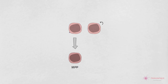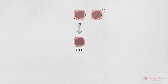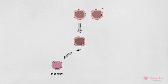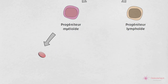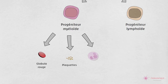À ce stade, une cellule fait l'un des deux choix d'engagement de lignage. Elle peut devenir une cellule progénitrice myéloïde ou lymphoïde. La première donne naissance à des globules rouges, des plaquettes, des granulocytes, des monocytes et à certaines populations de cellules dendritiques.